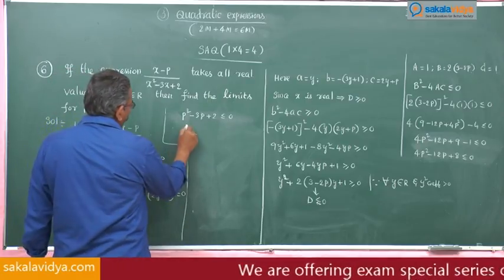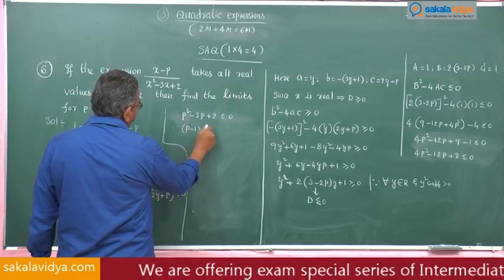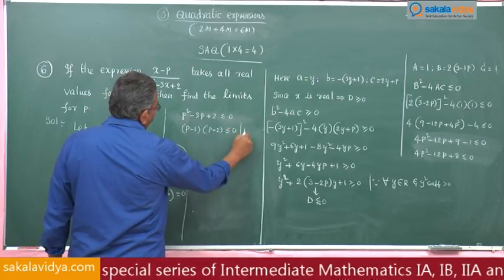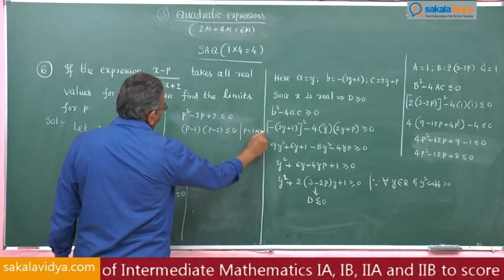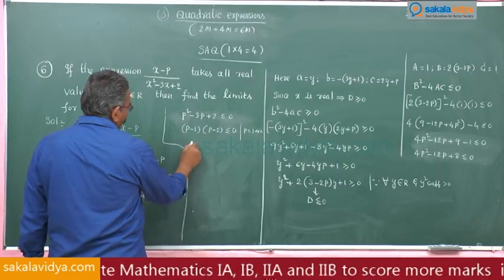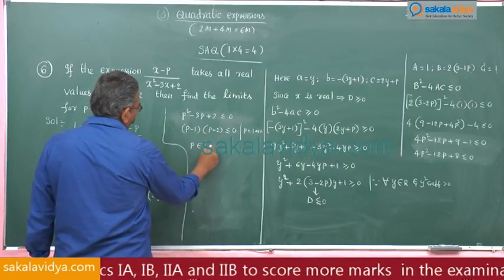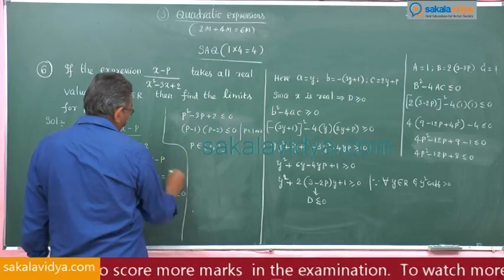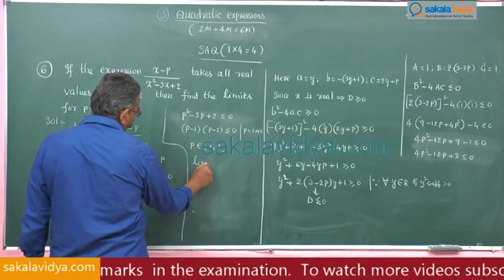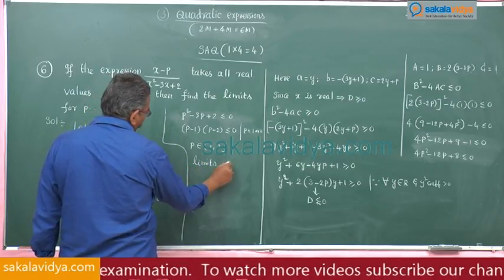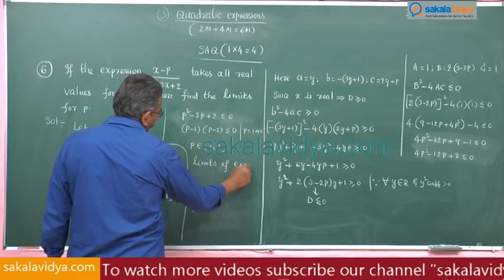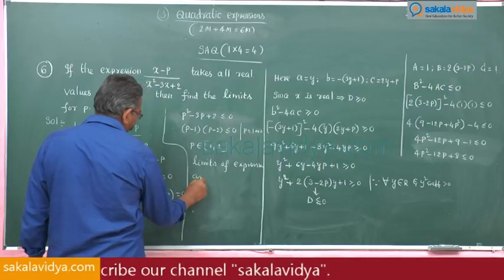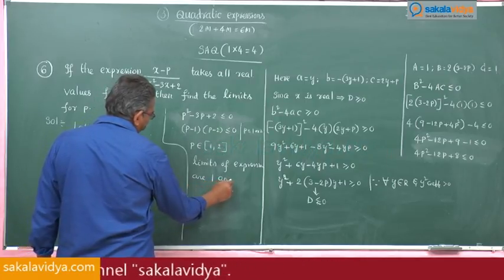This simplifies to (p minus 1)(p minus 2) less than or equal to 0. So p equals 1 or 2, meaning p belongs to [1, 2]. Therefore the limits of the expression are 1 and 2.